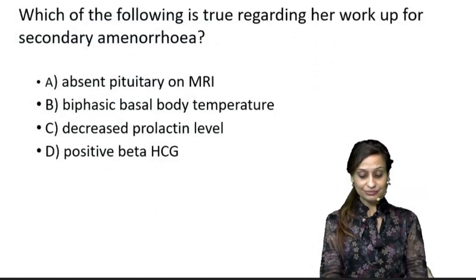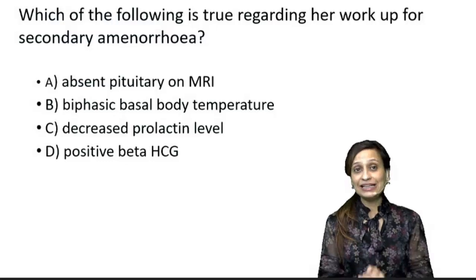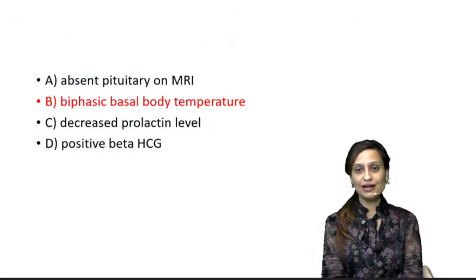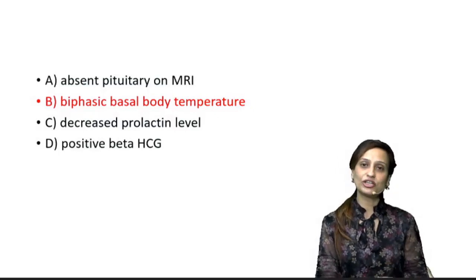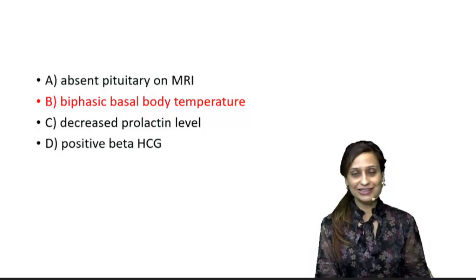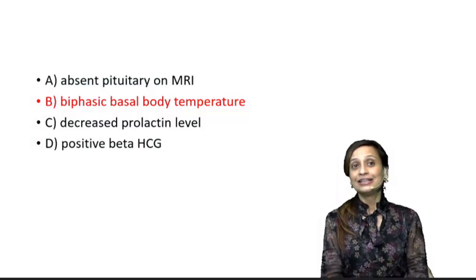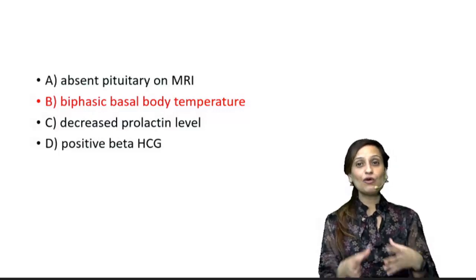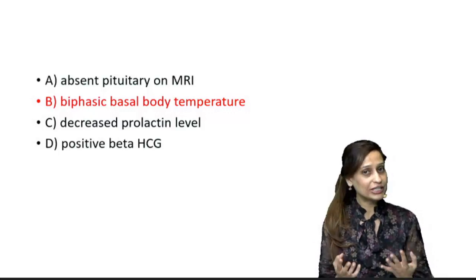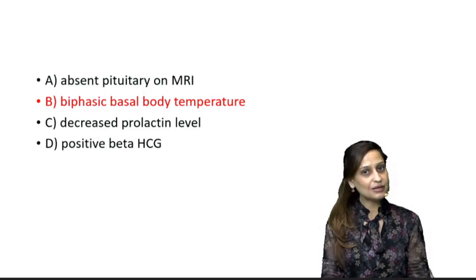Once you damage the endometrium, the problem lies at the uterus while the hypothalamus, pituitary, and ovaries function normally. Therefore, the answer to which of the following is true regarding her workup for secondary amenorrhea is: she would show a biphasic basal body temperature. This confirms the ovary is functioning normally — the HPO axis is intact. This woman would be ovulating, and if she is ovulating, she would show a biphasic basal body temperature, driven by the hormone progesterone. The correct answer is B — biphasic basal body temperature.